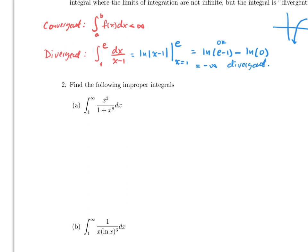Let's move on to number two, part a: find the following improper integral. An improper integral means the limits are infinite or the endpoints are not in the domain. For now, let's ignore the limits and focus on the integrand. We'll use substitution: let u equal x to the fourth.